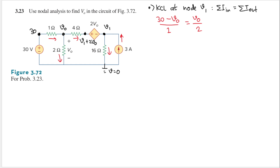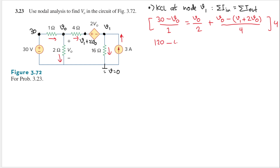For this current here, I will have V0 minus (V1 plus 2V0), divided by the resistance between them which is 4. Let's multiply both sides by 4. So I will have 120 minus 4V0, and that equals 2V0.